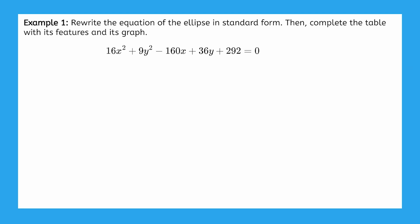First, let's make sure our equation is organized as x terms plus y terms equals a constant. To do that, we can just do some reordering on the left side and subtract 292 on both sides.